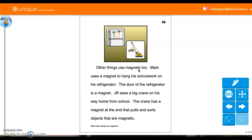Other things use magnets, too. Mark uses a magnet to hang his schoolwork on his refrigerator. The door of the refrigerator is a magnet. J.R. sees a big crane on his way home from school. The crane has a magnet at the end that pulls and sorts objects that are magnetic. So what other things do you know that are magnets? A refrigerator, they said a crane. Think of other things in your house or things that you have seen that are magnets.